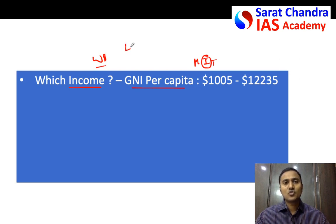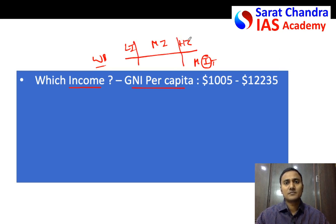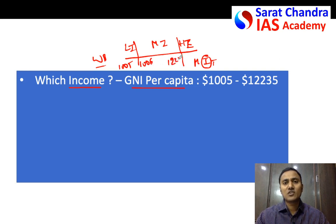The World Bank divides all countries into low-income, middle-income, and high-income countries — you can even draw a diagram for this. Low-income means GNI per capita is less than $1,005 per year. Middle-income countries range from $1,006 to $12,235, and more than $12,235 is high income. Just these two numbers are worth remembering.